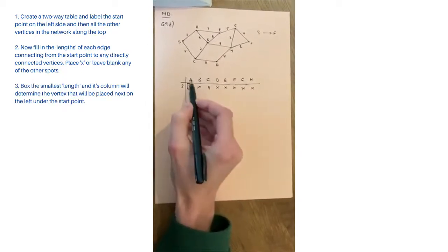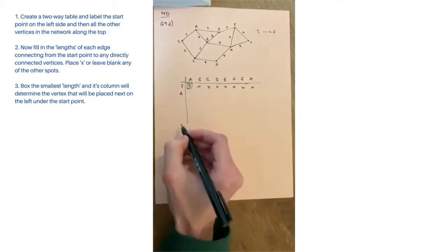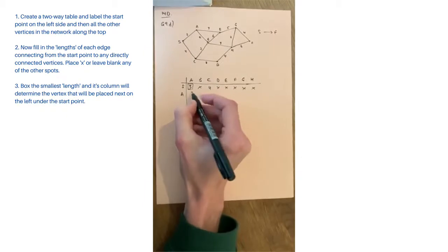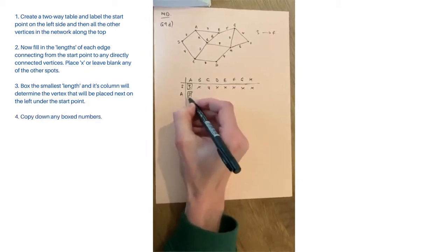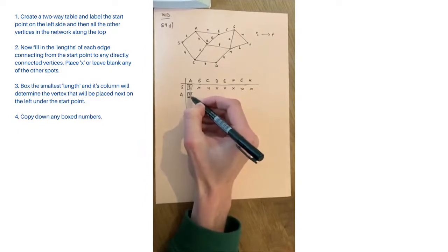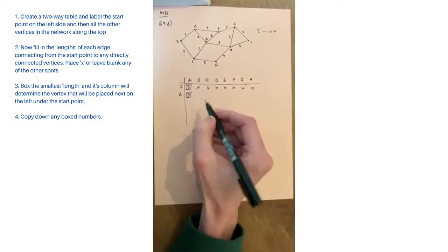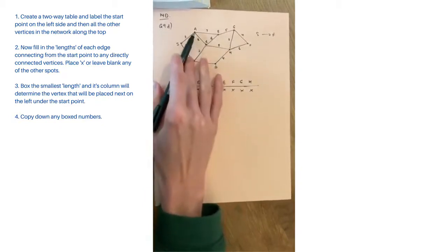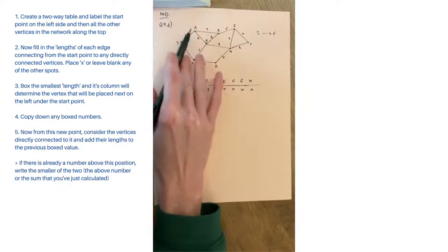That lines up with A, so that tells you where the next point is going to be. The next point goes down here. Anything that's already boxed you have to copy it down — a trick is you can also just draw a line to block it. It's up to you which way you want to do it. Then from A you go back to the network and look at your options from there.